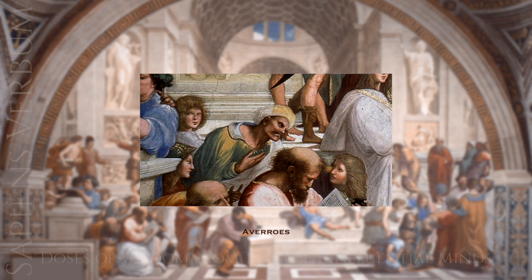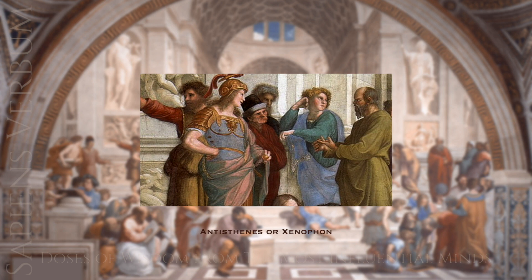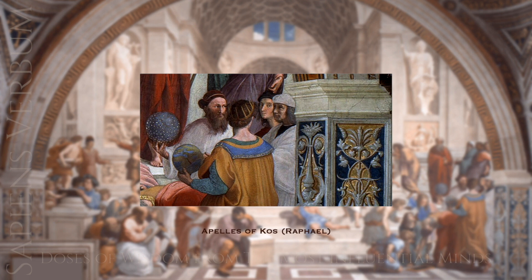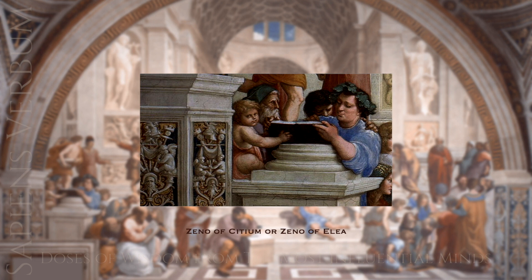Antisthenes was a philosopher who founded the Cynic school of philosophy. Xenophon was a historian and philosopher who wrote extensively about Socrates and his followers. Apelles was a painter in ancient Greece known for his realistic portraits and ability to capture emotions. Zeno of Citium founded the Stoic school of philosophy, while Zeno of Elea is best known for his paradoxes, which challenged the idea of motion and change.